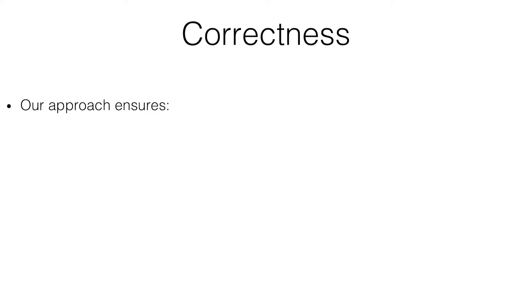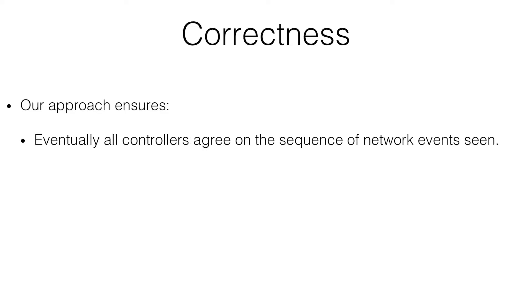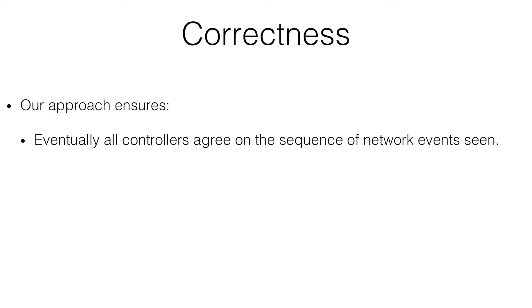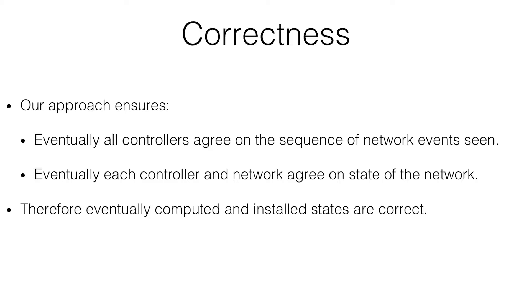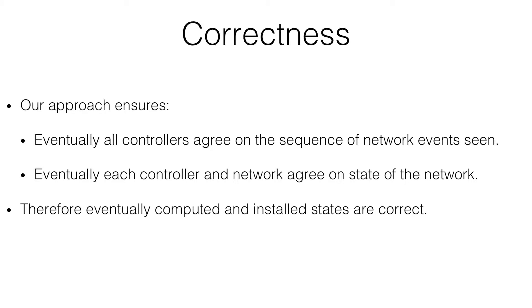One of the reasons Stefan was speaking about consistency is this notion of correctness, and having fast convergence without correctness is kind of crazy. What we did was make our approach ensure that eventually all controllers will agree on the sequence of events that have occurred in the network — they all reach a state where they agree on what happened. Eventually, for any controller, what it believes is the state of the network and the actual state will agree.